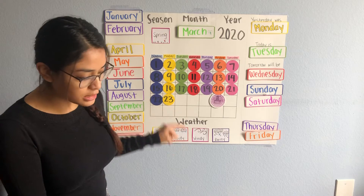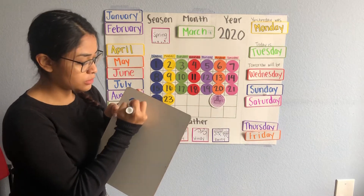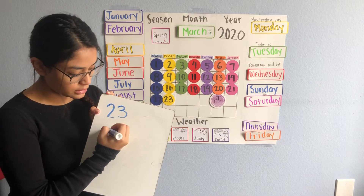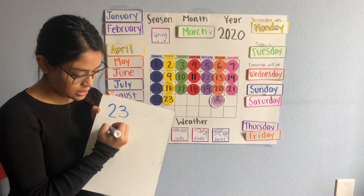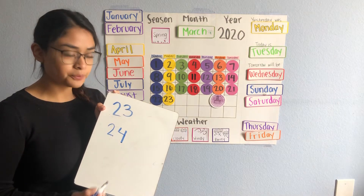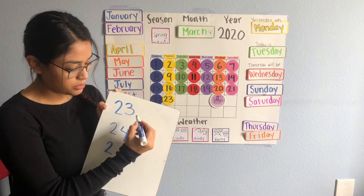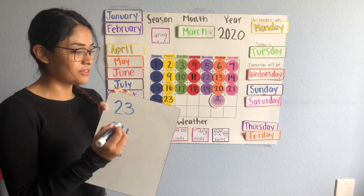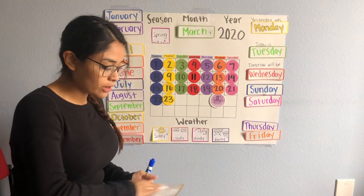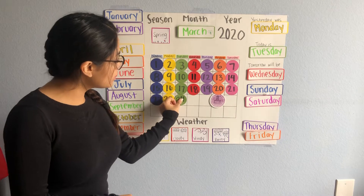Yesterday was the 23rd — a two and a three. Oops, just dropped some markers! So if yesterday was the 23rd, that means today is going to be the 24th. That's right — a two, and then a four: 24. So today we'll find a green 24 on the calendar. There's a pretty good green 24!